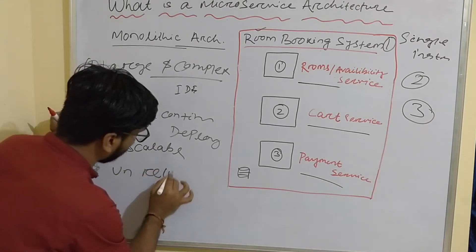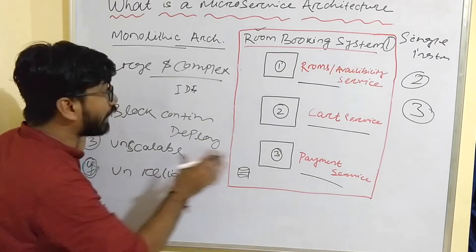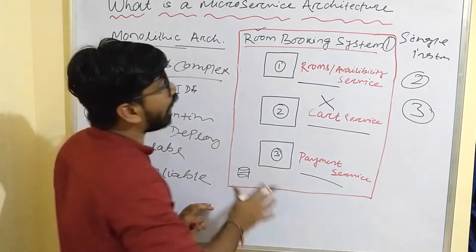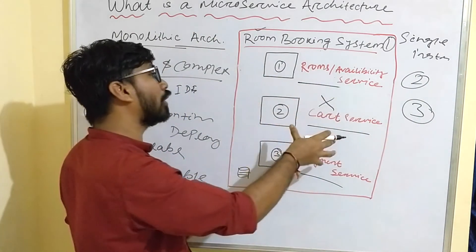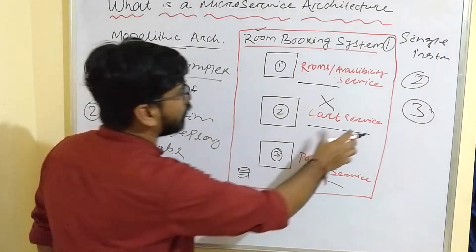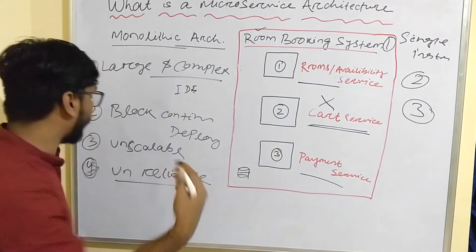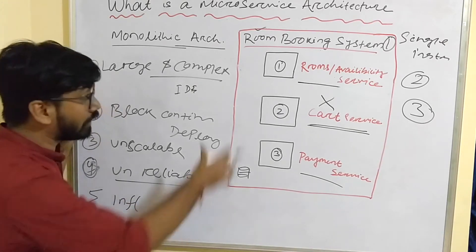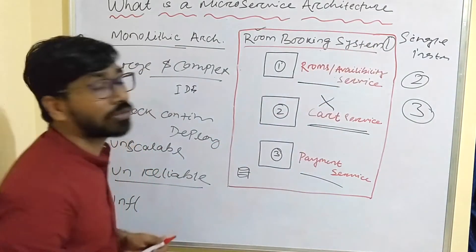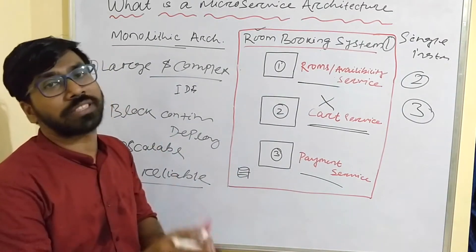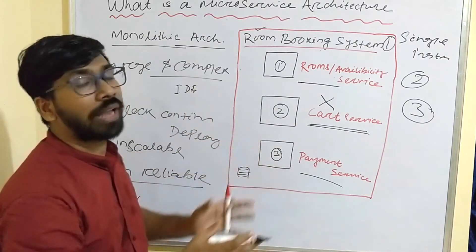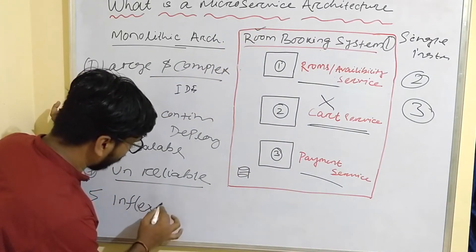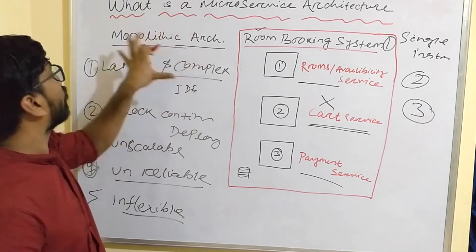The fourth drawback is that it is unreliable. In a single application with multiple services, if the car service is not working, you have to fix it and redeploy the whole application in that instance. The fifth drawback is that it is inflexible. Since everything is in a single instance, you have to write the application in a single technology stack — you cannot choose multiple languages or technologies for one application. So these are the drawbacks of monolithic architecture.